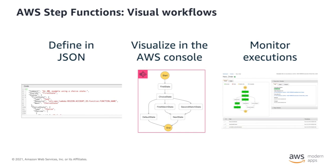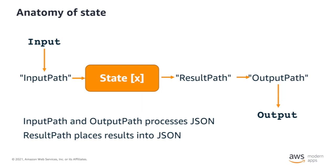Back to Step Functions. You can define your Step Functions workflows in JSON and visualize them from directly inside the AWS management console or your IDE as you build out your Step Functions workflow. You can execute, monitor, and inspect your workflows from within the console too. Step Functions workflows are essentially a state machine. Each task of the workflow has its own state — it takes an input from the preceding state, processes that input, and outputs it to the next. You have additional configurations such as input path, parameters, result path, and output path, which each manipulate the JSON as it moves through each state in your workflow.